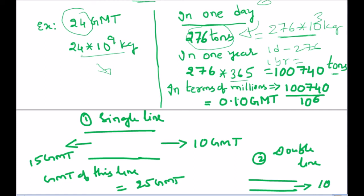If you extend this concept further, for a single line we have traffic in both directions — up direction and down direction. Suppose in one direction we have traffic of 15 GMT and in the other direction 10 GMT. The total GMT of this single line is 15 plus 10, which equals 25 GMT.